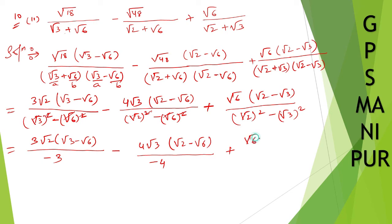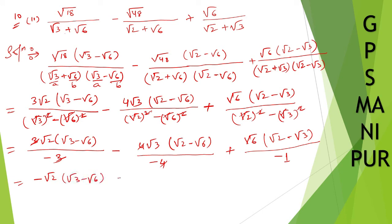Wait — do not multiply the numerator yet. We can cancel with the denominator — that is why I multiplied this way. So 3 and 3 cancel, 4 and 4 cancel, and 1 stays. The minus goes up, so we have minus root 2 into root 3 minus root 6. Minus and minus becomes plus for the second term: minus root 3 root 2 minus root 6. And minus gives minus for the third term: root 6 into root 2 minus root 3.